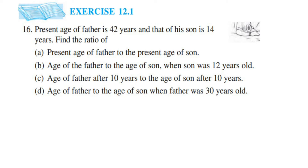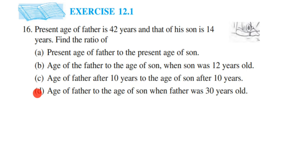Hey everyone, here is a question from exercise 12.1, 16th question. This is the last question from this exercise. The chapter is ratio and proportion of class X. The question is: present age of father is 42 years and of his son is 14 years. Find the ratio. They have given the age of father which is 42 years and the age of son which is 14 years.